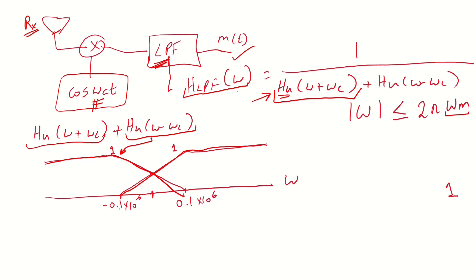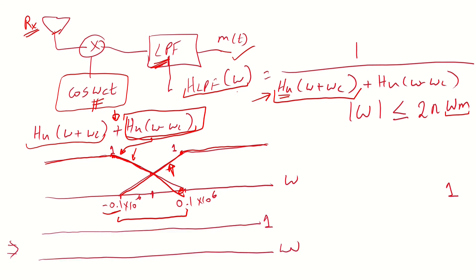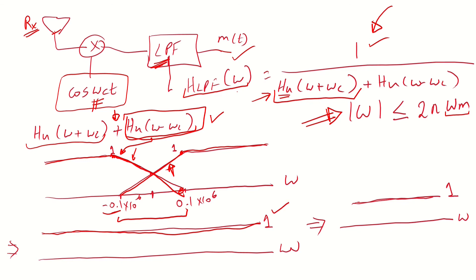H_U(ω+ω_c) starts from −0.1 mega radians per second, increasing linearly until it reaches 1 at +0.1 mega radians per second. H_U(ω−ω_c) has its maximum at −0.1 and minimum at +0.1, so it is linearly decreasing. Adding these two terms always yields 1 in the range |ω| ≤ 2π·ω_m. Inverting gives 1/1 = 1, so the low-pass filter has a constant gain of 1 across this range.